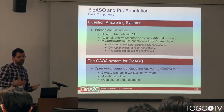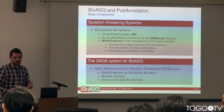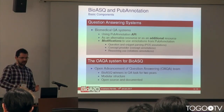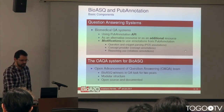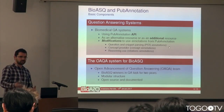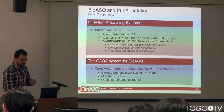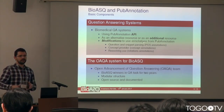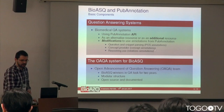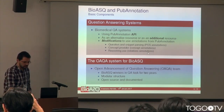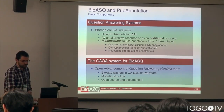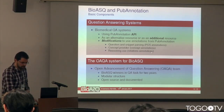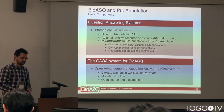Some question-answering systems should be modified — it's difficult to develop now — to use the PubAnnotation API to answer the questions using additional annotations from PubAnnotation. This modification highly depends on the kind of annotation we are going to use. I think we can focus on concept annotations as a first step, although other types of annotations can also be used.